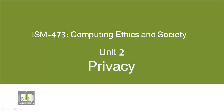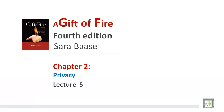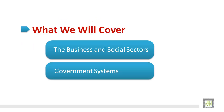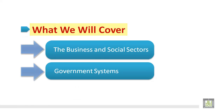Hello everybody, welcome to lecture 5 of our course Computing Ethics and Society. In this lecture we are still in chapter 2, Privacy. The topics to be covered in this lecture are the business and social sectors and the government systems.